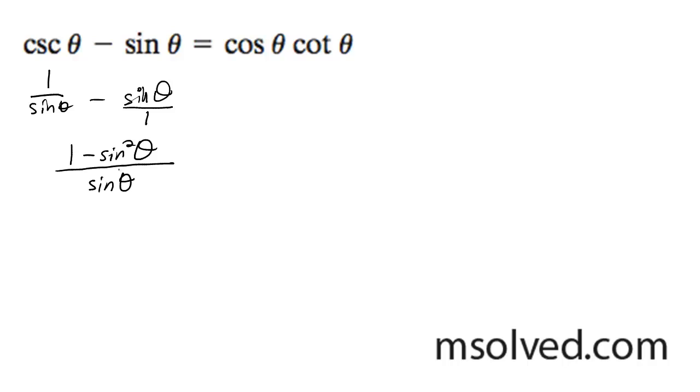So I get 1 minus sine squared theta. Now what's going to happen here is the top is the same identity. It's an identity you can convert to cosine squared theta over sine theta.